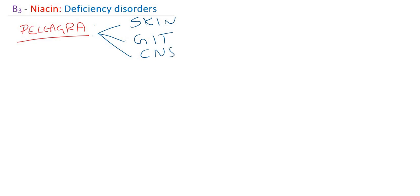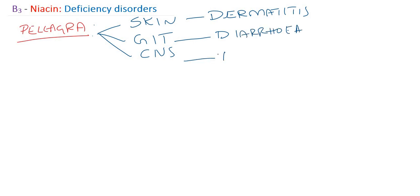If the skin is affected, it leads to dermatitis. Gastrointestinal tract involvement leads to diarrhea. Central nervous system involvement leads to dementia — meaning altered sensorium, forgetfulness or loss of memory, and confusion. Diarrhea may be mild or severe depending on the degree of niacin deficiency.